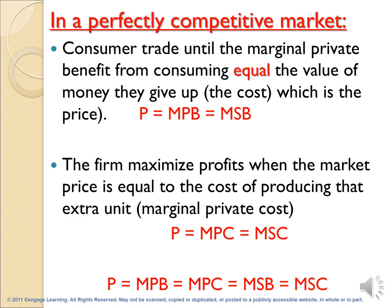We will talk about the efficiency criteria in the perfectly competitive market. In the perfectly competitive market, we have the consumer and the producer, each of them trying to get the maximum benefit or the maximum utility. The consumer trades until his marginal private benefit from consuming the unit equals the value of money that he gave up, or equals the cost of getting this unit by paying its price.